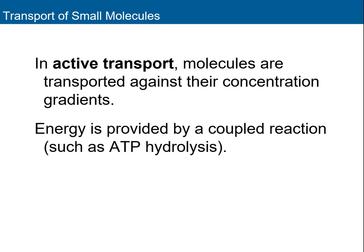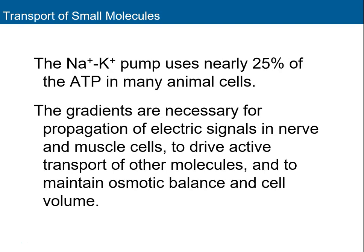Active transport — for example, the sodium-potassium pump — requires ATP to move things against their concentration gradient. The sodium-potassium pump uses about 25% of the ATP in animal cells, because every cell must maintain resting membrane potential and that pump is always working.